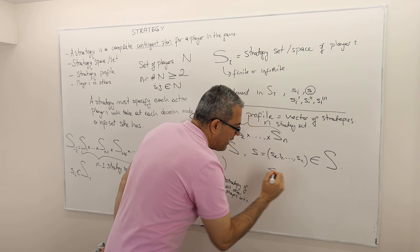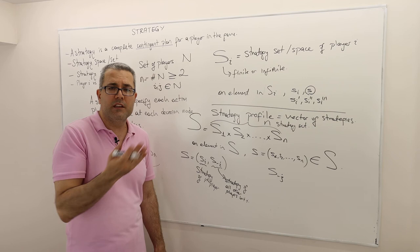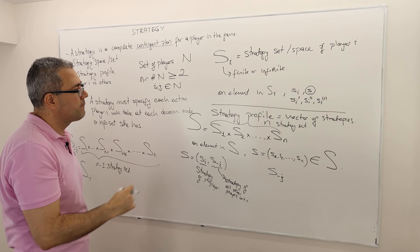So whenever you see minus i, sub minus i, it means the strategy profile of all the other players except player i. So if I have something like S_{-j}, that means all the other players' strategy except player j. So S_{-1}, for example, the strategies of the other players except player one and so on. Okay.